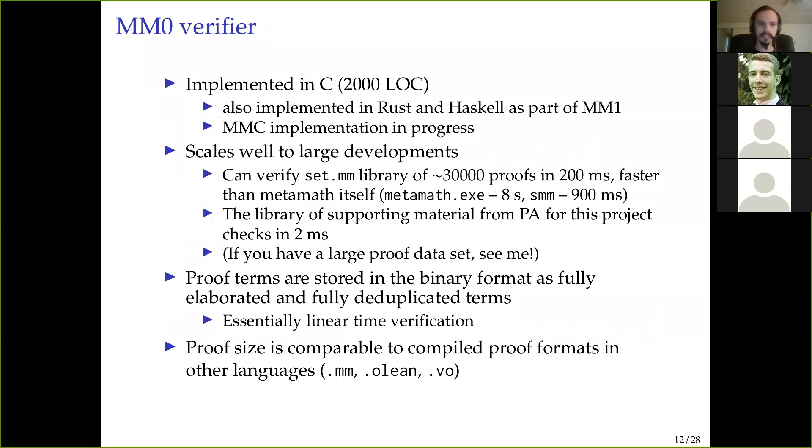The correctness theorem for MM0 implies that if the MM0 verifier accepts any proof of this file, then Goldbach's conjecture is, in fact, provable in Peano arithmetic. Okay, so the MM0 verifier is implemented in C. It's about 2,000 lines of code. There are actually several re-implementations of it. As part of MM1, we need a separate version of the verifier inside Rust and Haskell. And the implementation in MetaMath C is in progress.